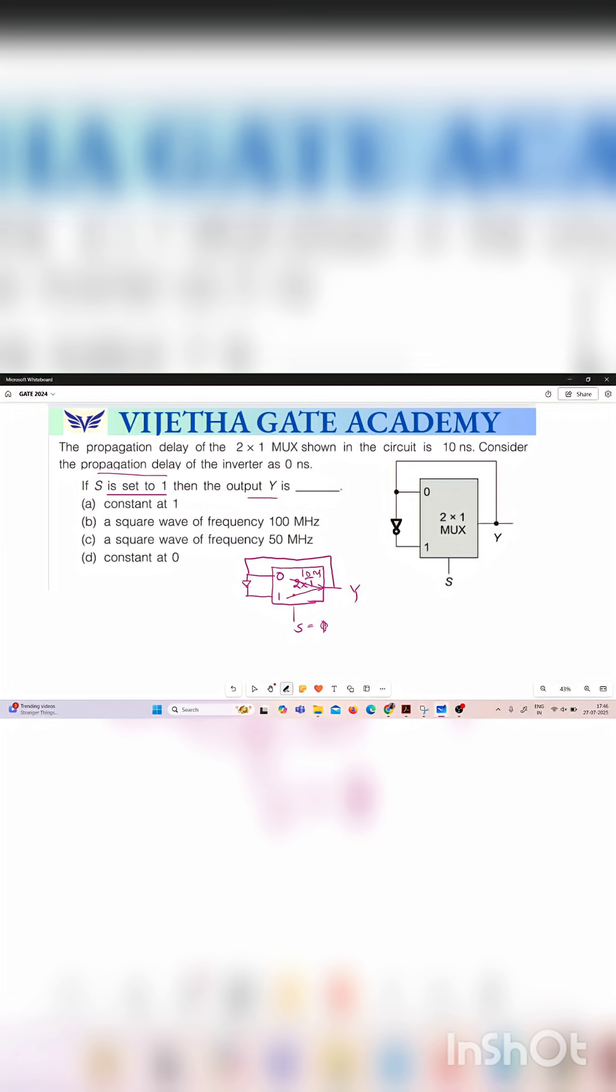So here y and this y is passing through the NOT gate. So the input is y bar. So when s is set to logic 1 if selection line is 1 the output is y is equal to here the input is y bar.